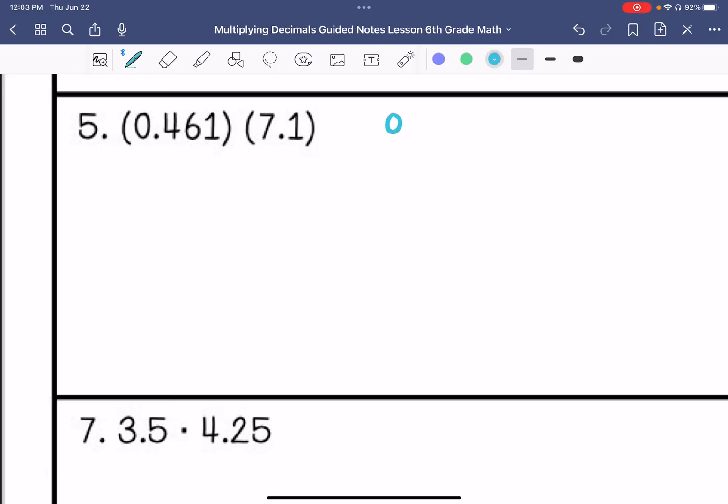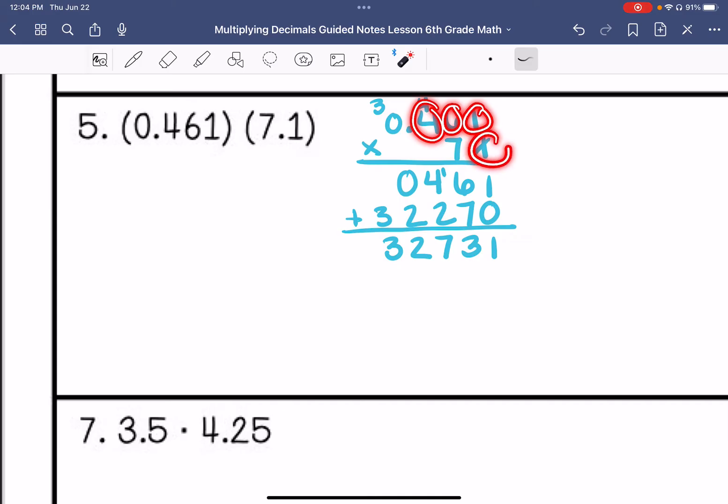Alright, we have 0.461 times 7.1. 1 times 1 is 1. 1 times 6 is 6. 1 times 4 is 4. 1 times 0 is 0. 7 times 1 is 7. 7 times 6 is 42. 7 times 4 is 28. Plus that 4 is 32. 7 times 0 is 0. And then that 3. I'm going to add these. And then I have 1, 2, 3, 4. So this is 3.2731.